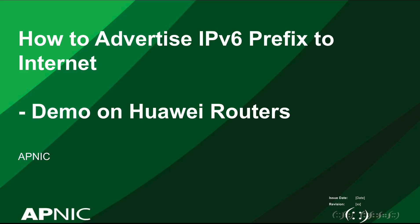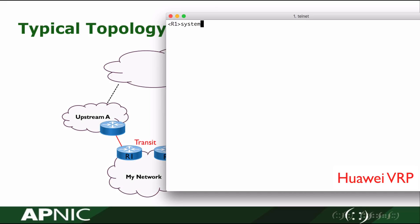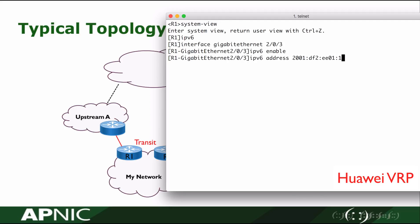The topology background, please refer to the overview video. First step, we will configure the IPv6 addresses on interface. We are configuring on egress router R1. First, enable IPv6 globally. In the interface GE203, enable IPv6. Configure the IPv6 address as 2001:df2:ee01:10::2/126.